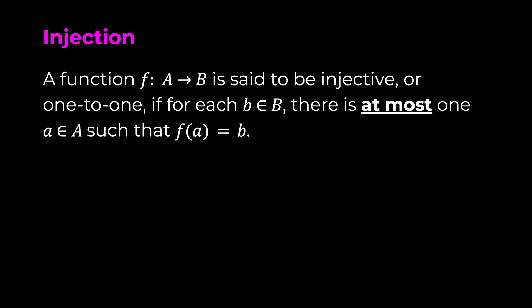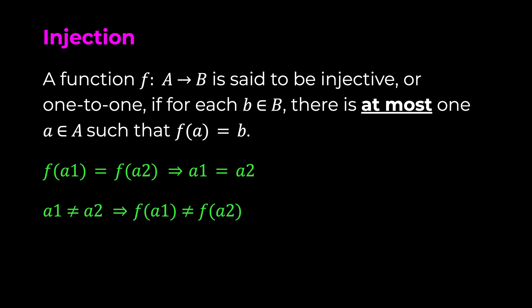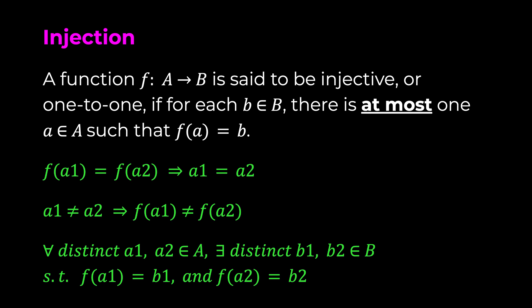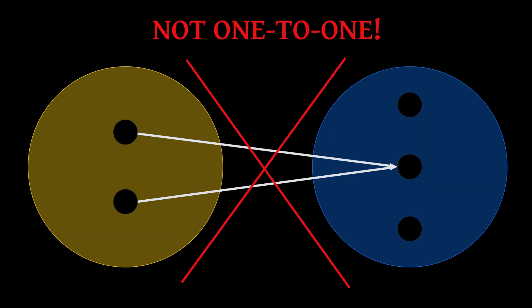Now let's start by defining these three terms. A function f such that A is mapped to B is said to be injective or one-to-one if for each b in B there is at most one a in A such that f(a) equals b. In other words, if f(a1) equals f(a2) then a1 equals a2, or equivalently, for every distinct a1 and a2 in A there exist distinct b1 and b2 in B. In simpler terms, no two elements in the domain will map to the same element in the codomain — that's what we mean by a one-to-one function.